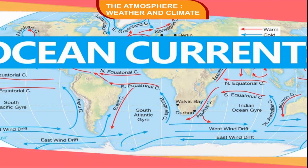Ocean Currents. A stream of water in an ocean flowing in a constant direction is called an ocean current. They make a considerable difference in the temperature along coastal regions. The warm ocean currents along the coast help to increase the temperature while cold ocean currents help to decrease the temperature in a coastal region. For example, the cold Labrador current affects the eastern coast of Canada and the Canadian coast remains frozen during winter. Similarly, on the western coast of Europe, the warm North Atlantic drift melts the ice during winter and keeps all the ports ice-free throughout the year.